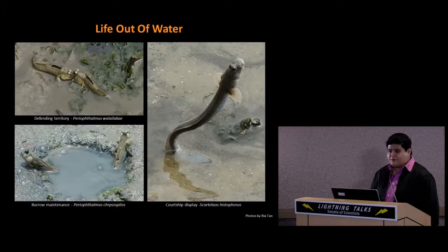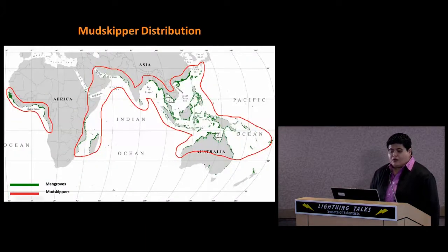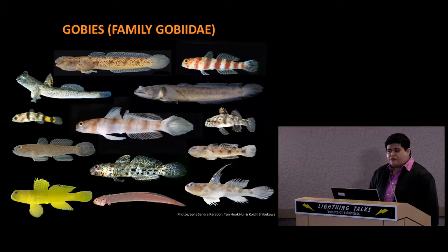Some mudskipper species emerge out of water onto land, where they forage, defend their territories, maintain their burrows, and engage in courtship displays. Mudskippers are found throughout the Indo-Pacific, with one species in Western Africa. Their distribution is coincident with mangroves — they live in mangrove forests as well as adjacent mudflats and tidal rivers.